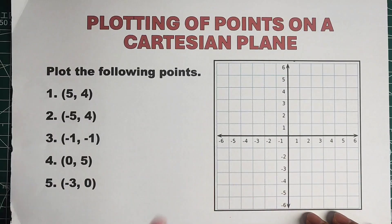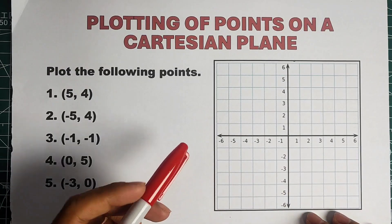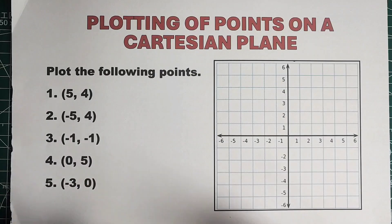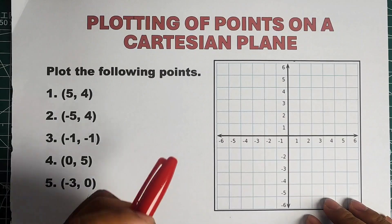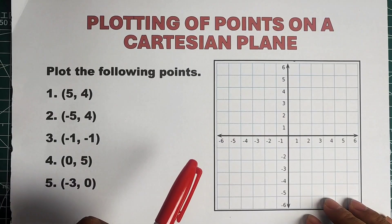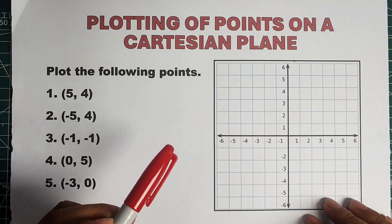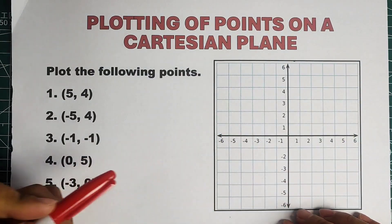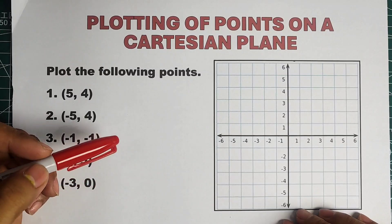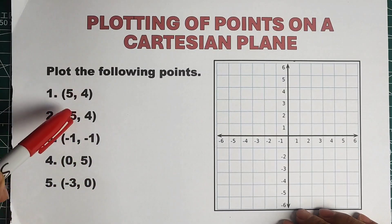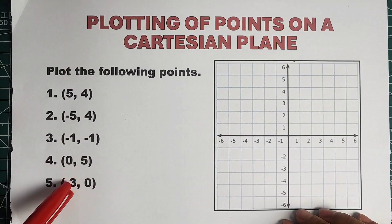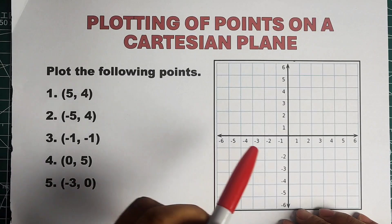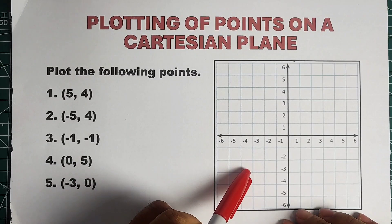Hi guys, it's me, Teacher Goyan. In today's video, we will try to discuss how to plot the points on a Cartesian plane. And in the second part of this video, we will try to identify the coordinates of a given point on a Cartesian plane. So without further ado, let's do this topic. So what we have here right now are 5 different points or ordered pairs to be plotted here in a given Cartesian plane.